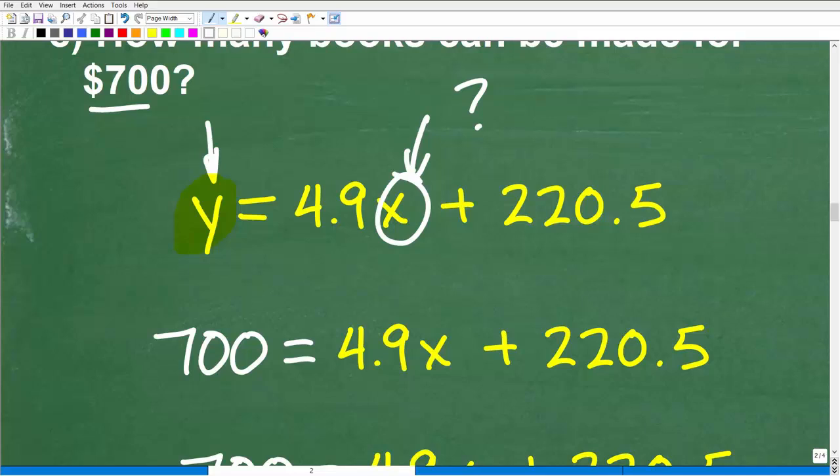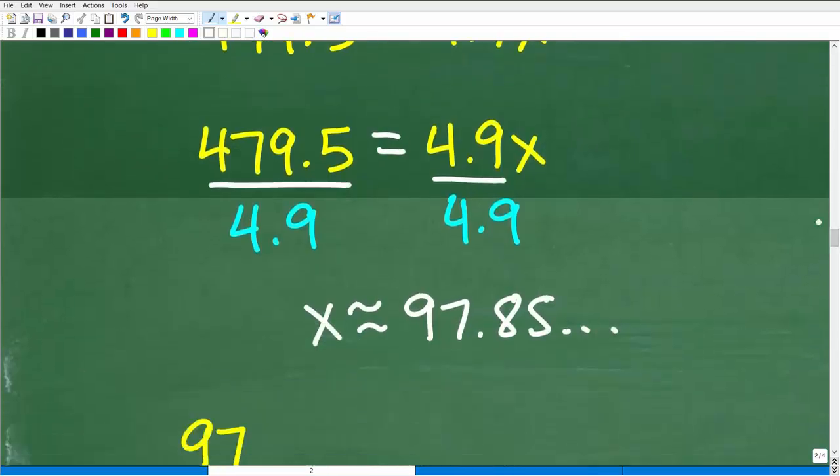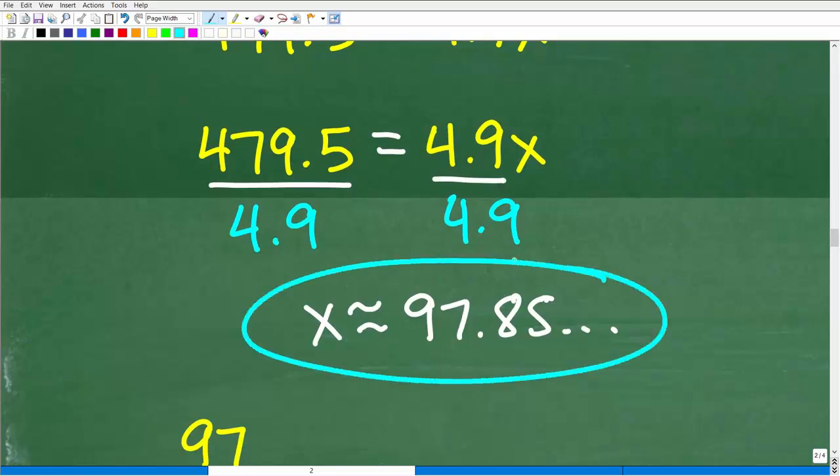Here, it's different. We know our total cost, our budget here. We want to know how many books can we make with this total cost, $700. So we're going to plug in 700 for Y and solve for X. When we do this, you can see the algebra here. We have 700 equal to 4.9X plus 220.5. I want to subtract 220.5 from both sides of the equation. I get 479.5 is equal to 4.9X. I'm going to solve for X by dividing both sides of the equation by 4.9. And what do I get? I get X is approximately equal to 97.85 on and on.